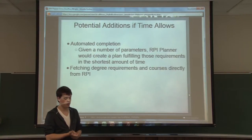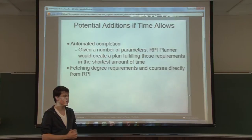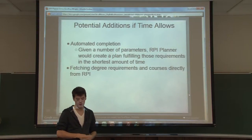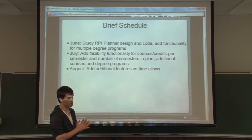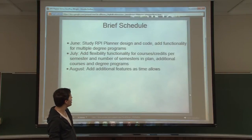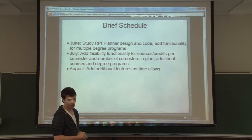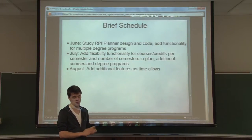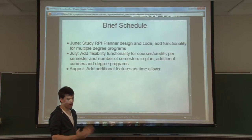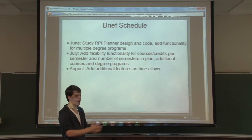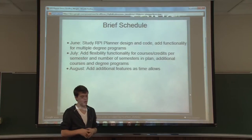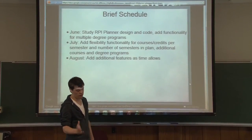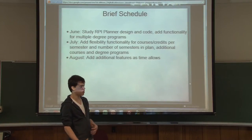Also, a feature that would fetch your requirements directly from RPI instead of being hard-coded in would be a nice addition — that might actually be a better use of time and a better feature for RPI Planner. Here's my brief schedule: so far in June I've really dived into the design and code of the program and started adding functionality for multiple degree programs. Next month in July, I want to add flexibility for designing your plan and possibly add more courses and degree programs for more diversity. Then I'll use August and the end of July to add those additional features if I have time.